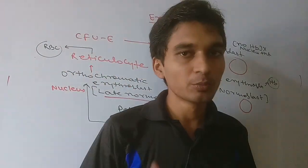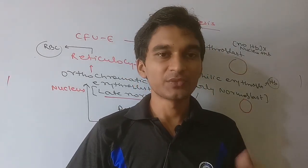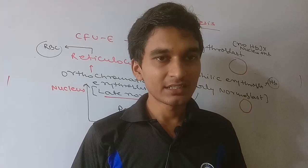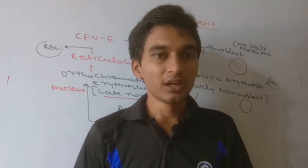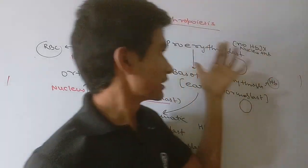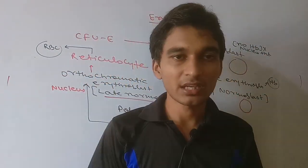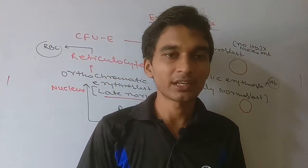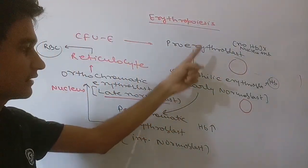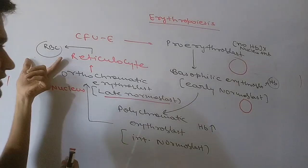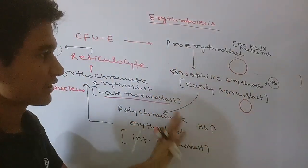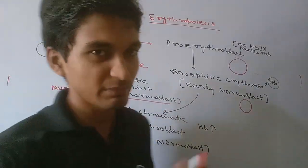We started with the pluripotent stem cell, which gives rise to two types of committed cells — myeloid series and lymphoid series. The myeloid series forms the Colony Forming Unit GEMM, where E for erythrocyte gives rise to the pro-erythroblast and finally to RBC. These are the basic steps of erythropoiesis and this is the most important question for semester examinations.